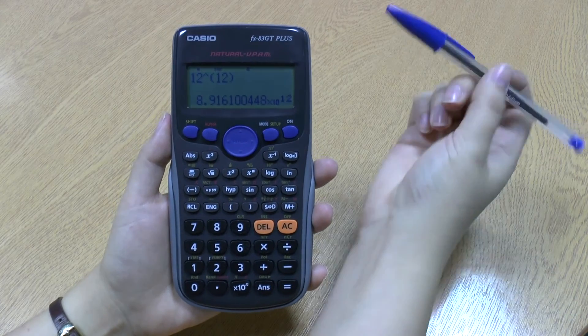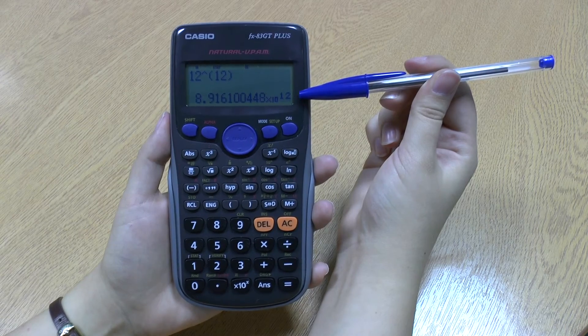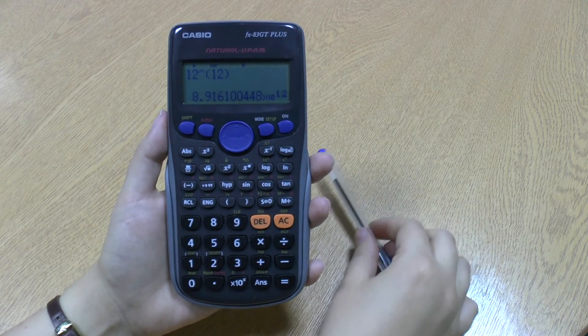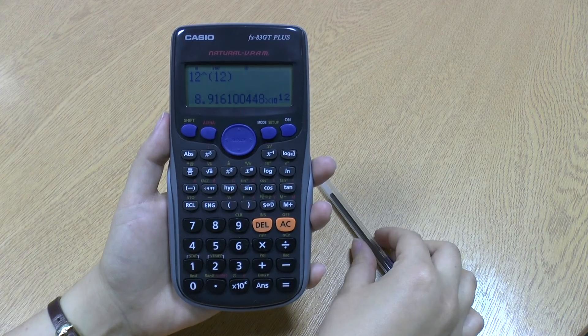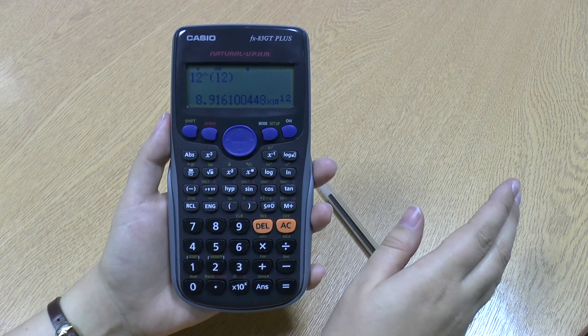So if your calculator comes up with something that looks like this, remember it may have a negative index on the 10. That is your calculator saying, oh no, this number is too big or too small, I can't show it.